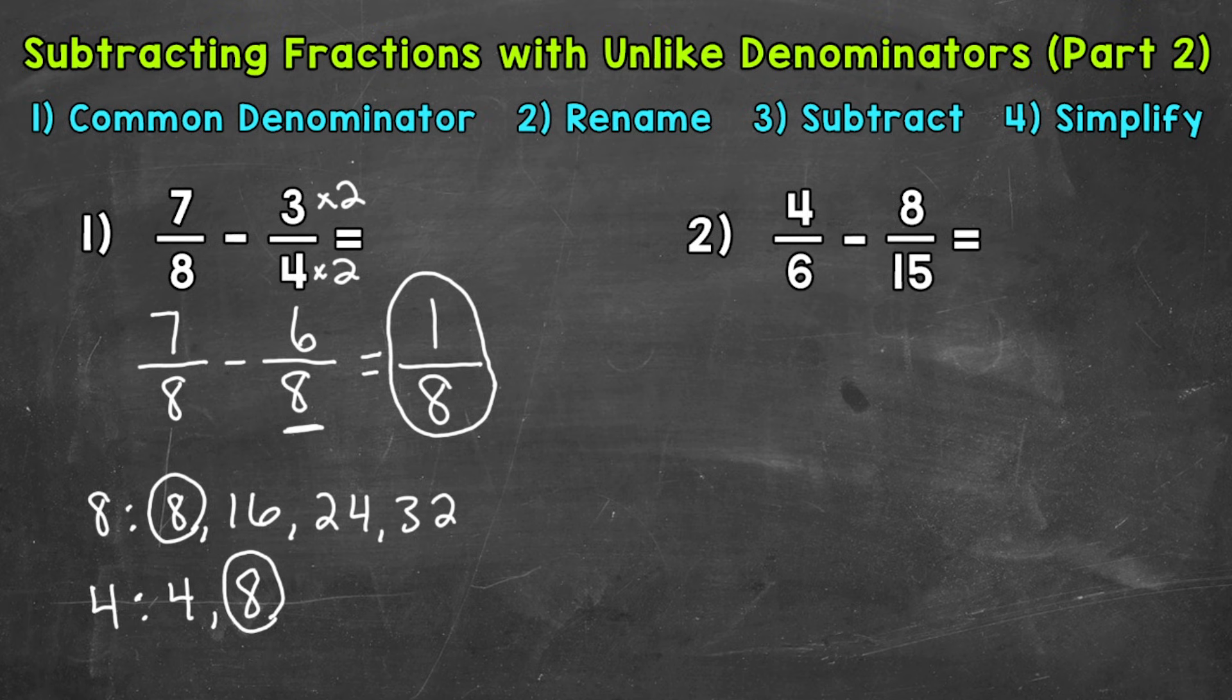Let's move on to number 2 and try another one. So we have 4/6 minus 8/15. We need a common denominator. So let's write out some multiples of 6 and 15 and see if we can find that least common multiple, which will be our common denominator.